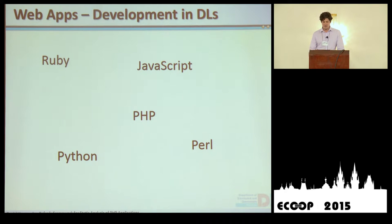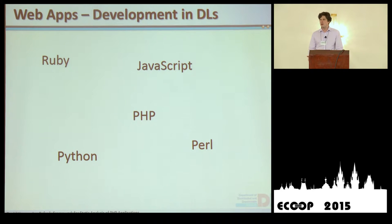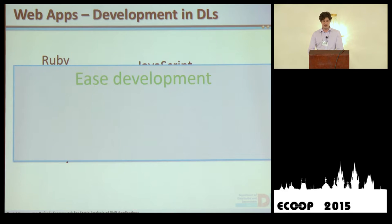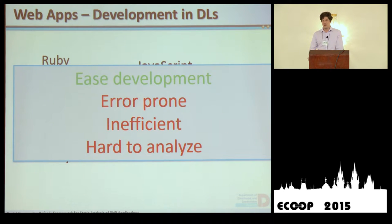The common thing about these languages is that they are usually very easy to use and usually do not have any strong type system. Even people who don't know anything about security or programming can start developing applications. To my surprise, the majority of applications running currently on the Internet are written in PHP. These languages have the common property that they are very easy to develop in, but they are very error-prone. The resulting code is inefficient, and the bad news for us is that they're also hard to analyze.